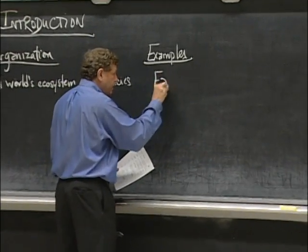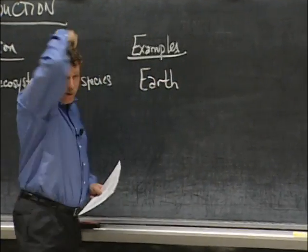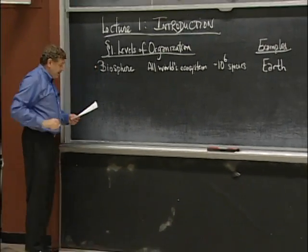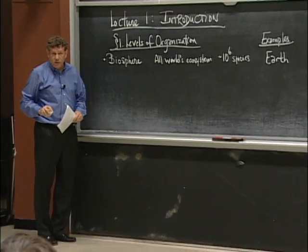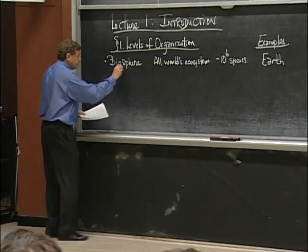And there are 10 to the God knows how many species of microbes. In fact, it's even hard to define species for microbes. So it's a fantastic diversity. And if we think about examples, the number of examples of biospheres that we are aware of is one. Currently, it's the Earth. There might be other biospheres, but we're not aware of them. That's one level of organization.